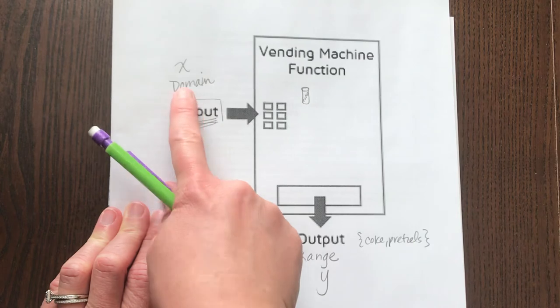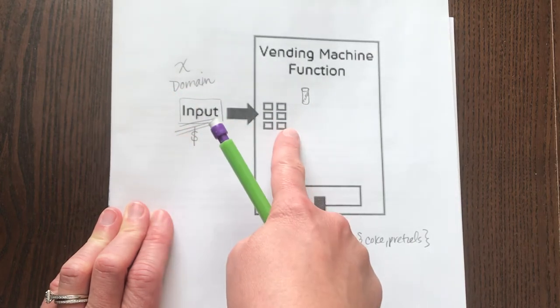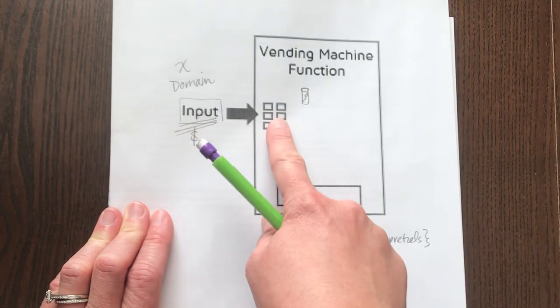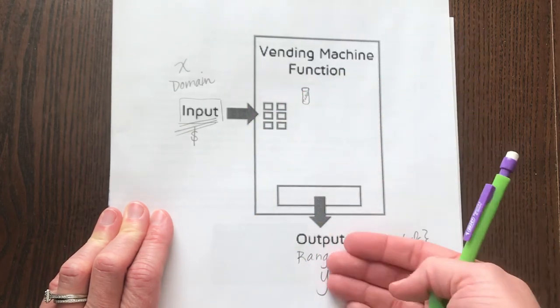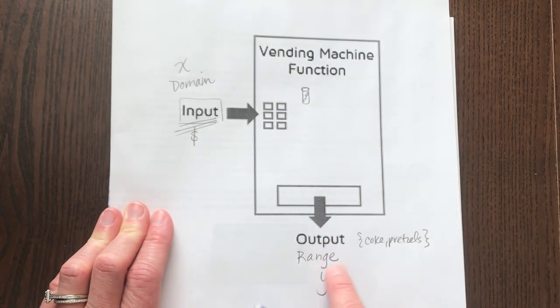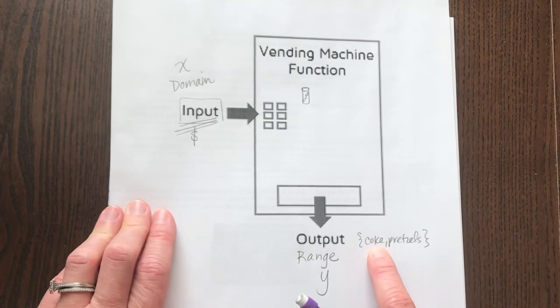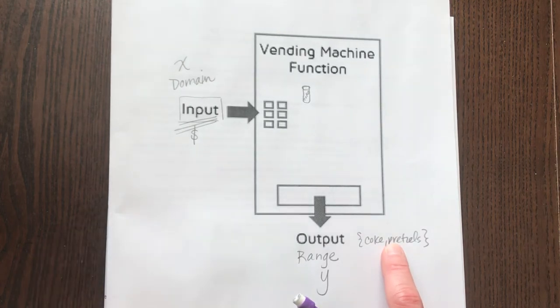And an easy way to think about it is kind of like a vending machine. What you put in is your domain, and typically in a vending machine that would be money. Some of them now you can use a credit card, but still you have to pay. And then what comes out is your range, your outputs, which would be your snack. Coke, pretzels, candy bar, something like that.